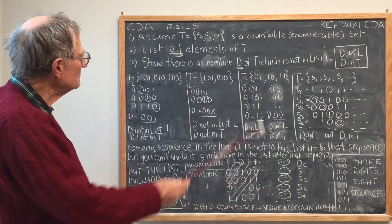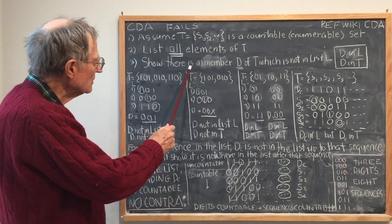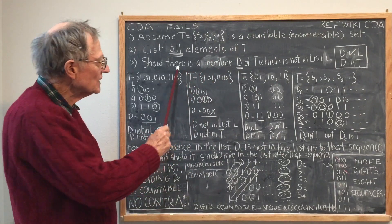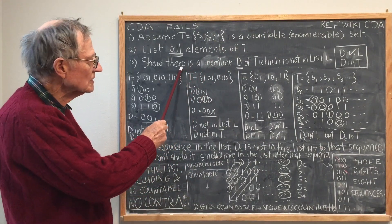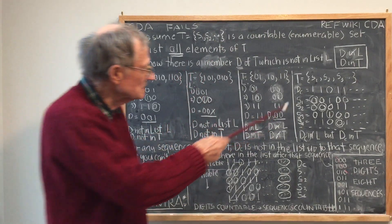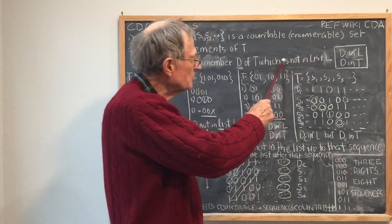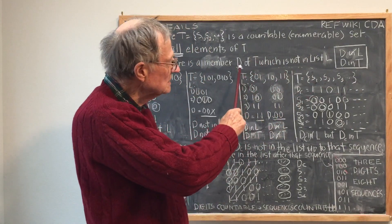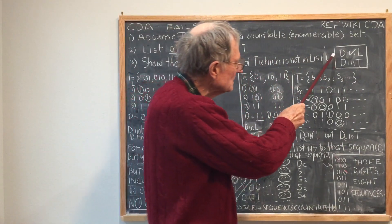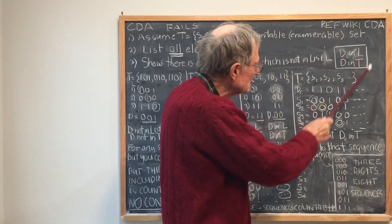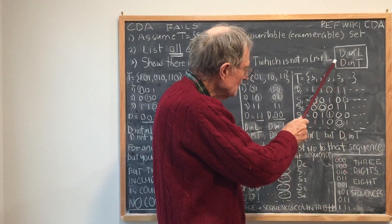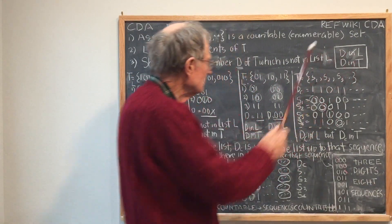You assume all the members of T are in the list, then you show there's a member of the list which isn't in T. So you want to find a D such that D is not in the list, but D is in T.